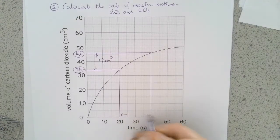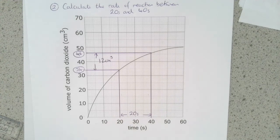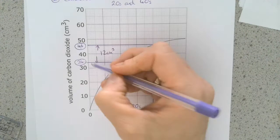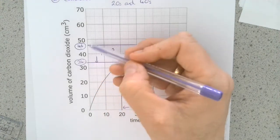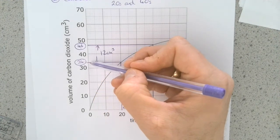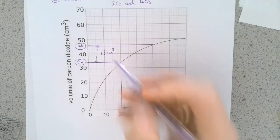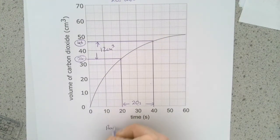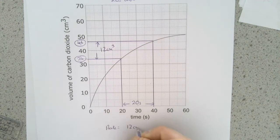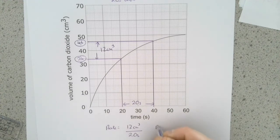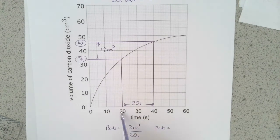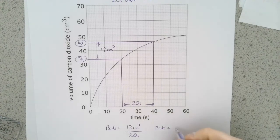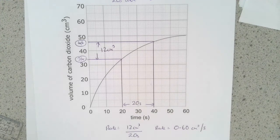And the time taken, the distance between here, between 20 and 40, is going to be 20 seconds. So again, the rate is going to be the amount or change in product or reactant. In this case, it's the increase in product, carbon dioxide gas, divided by the time taken. So we go rate equals the change, which is 12 cubic centimeters, divided by the time, which is 20 seconds. And therefore, in this case, the rate between 20 and 40 seconds is 0.60 centimeters cubed per second.